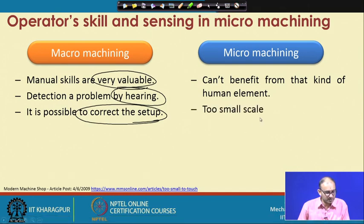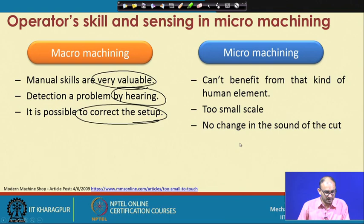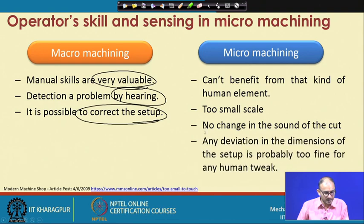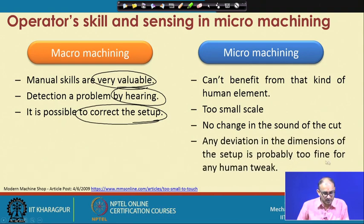The tool is at a very small scale, so it is difficult to even see it, and the workpiece is also difficult to locate. There is no change in the sound of the cut, because even if machining is occurring or not you cannot differentiate, as everything is at a very small scale. Any deviation in the dimensions of the setup is probably too fine for any human perception.